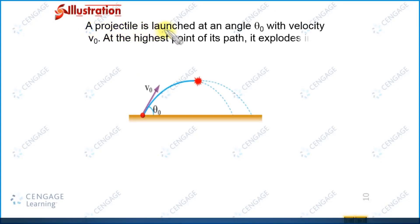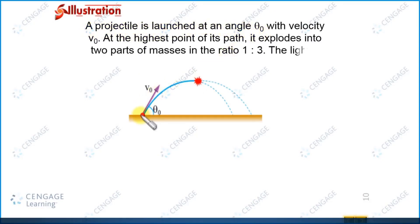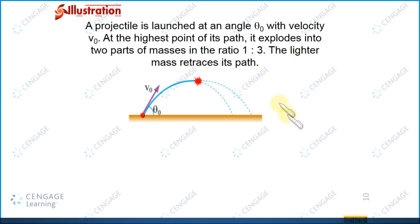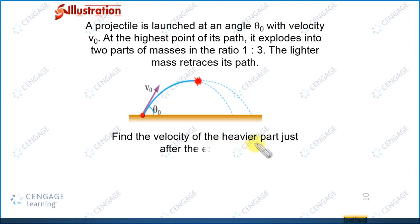In this illustration, a projectile is launched at angle theta naught with initial velocity v naught. At the highest point of its path, it explodes into two parts with masses in the ratio 1 to 3. The lighter part retraces its path. Find the velocity of the heavier part just after the explosion.